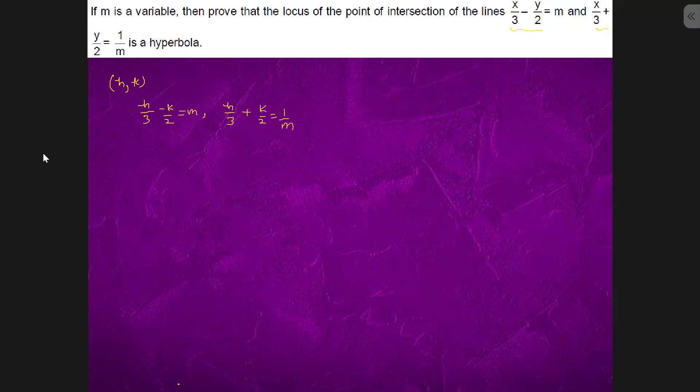So if we try to see the pictorial way, it is this line and this line. And the point of intersection is (h,k).